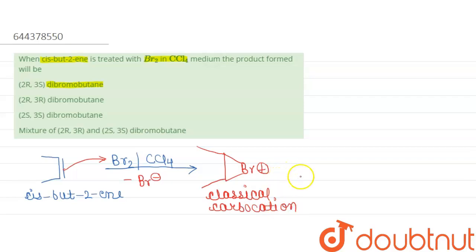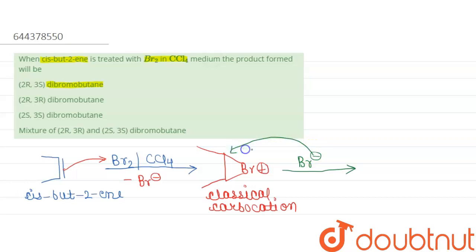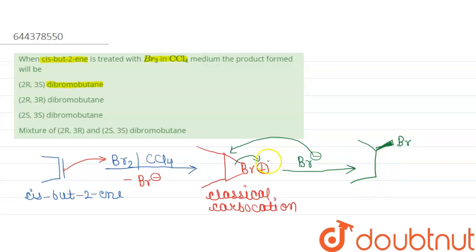On further reaction, this carbocation reacts with the Br⁻ nucleophile, which is already present. The Br⁻ nucleophile can attack from the front side as well as from the back side. If it attacks from the front side, the Br will be on the wedge bond. If it attacks from the dash side, there are only two possibilities — attack from the wedge or from the dash.